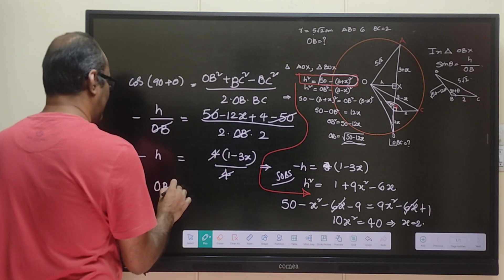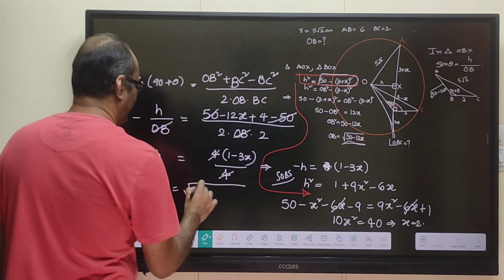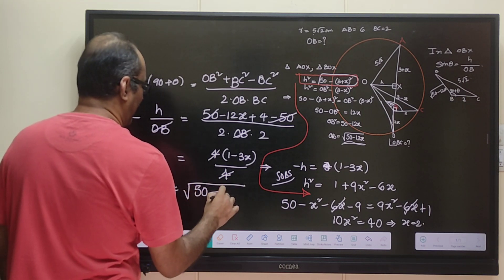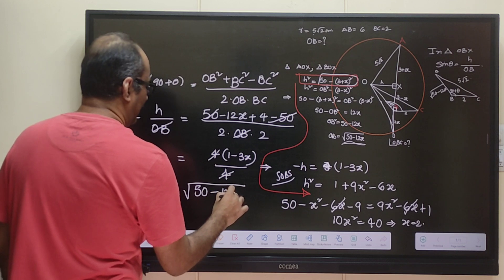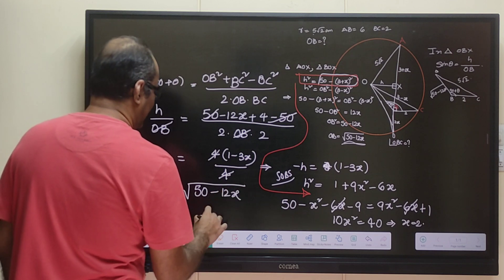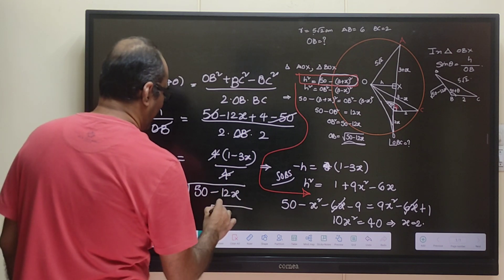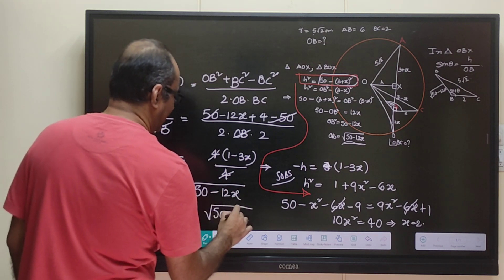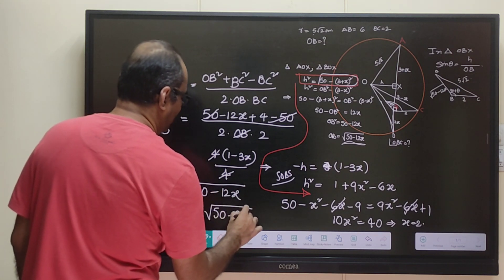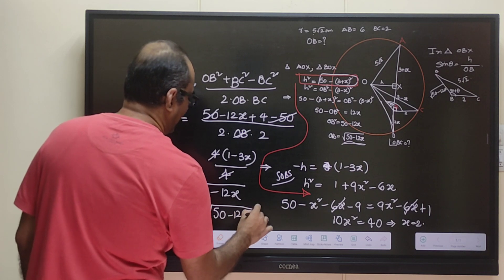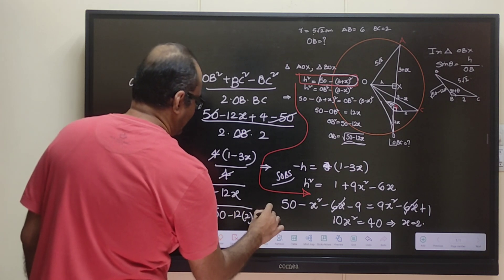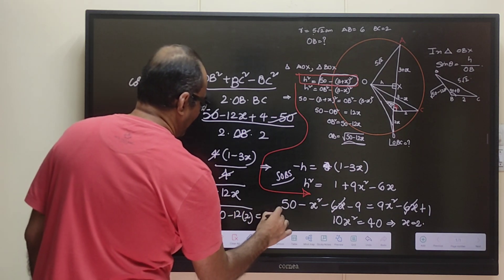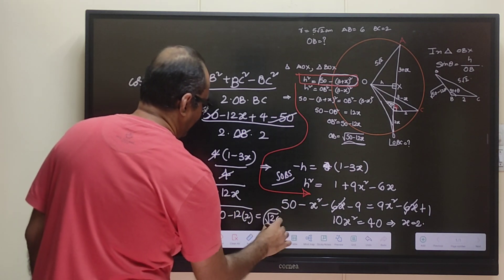That's how we got OB equals √26. There will certainly be more than one way of solving this problem. This is the way I was able to solve it on my own. If you got any other answer or you see any wrong steps, please let me know.